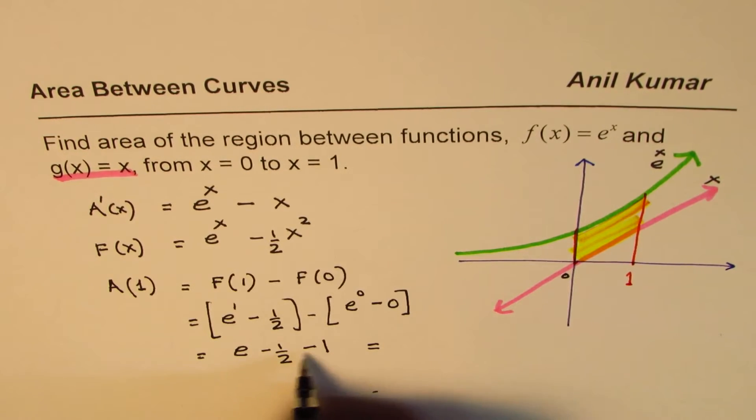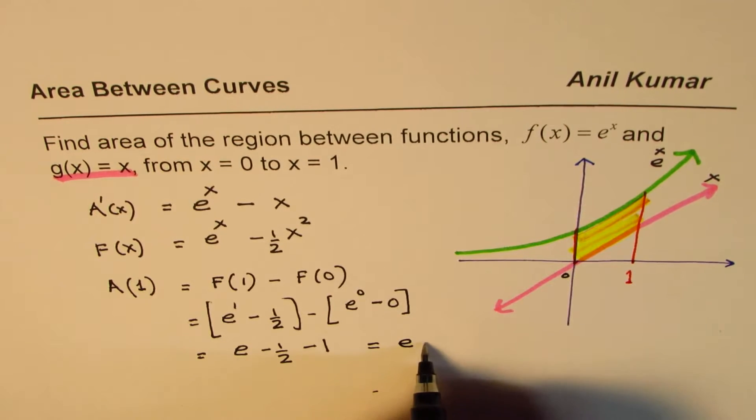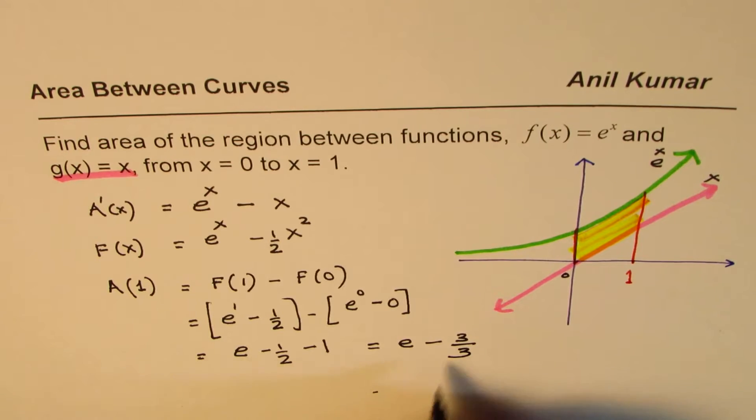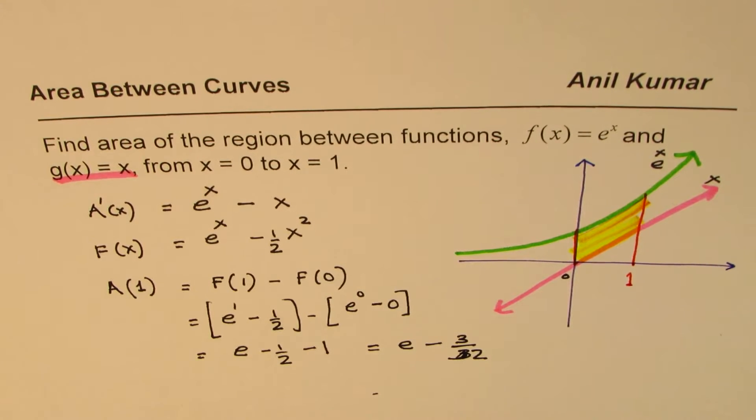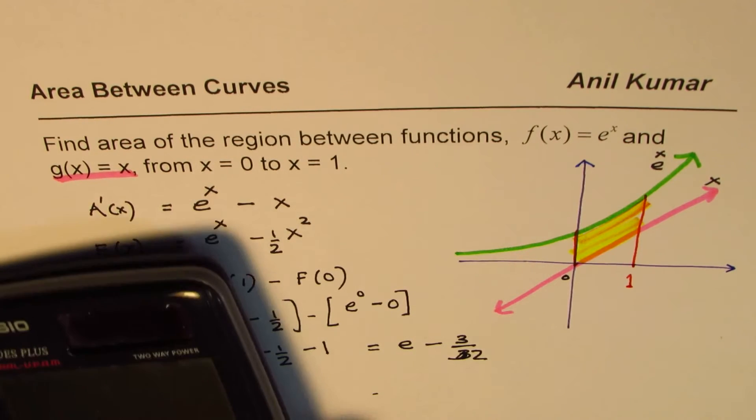So that gives us e to the power of 1 is e minus half, and this is minus 1. And that is, so it is e minus 3 by 2. So e minus 3 by 2.